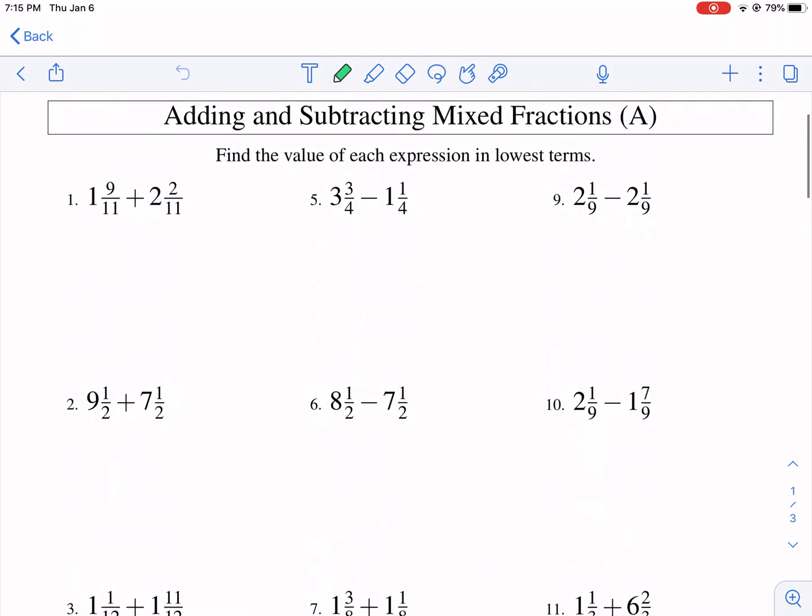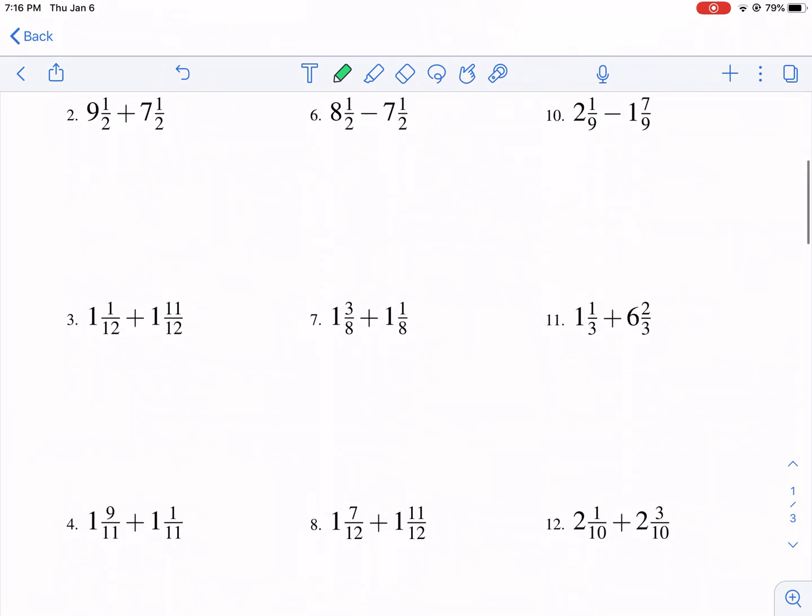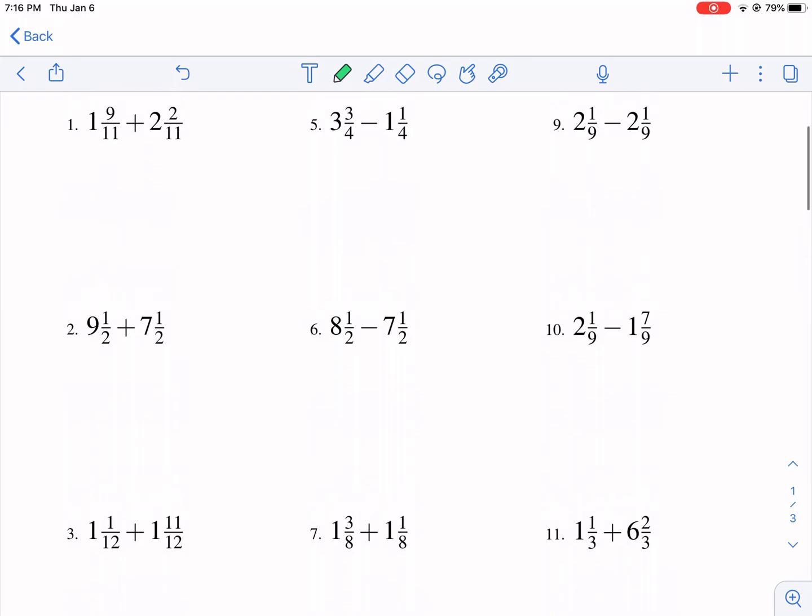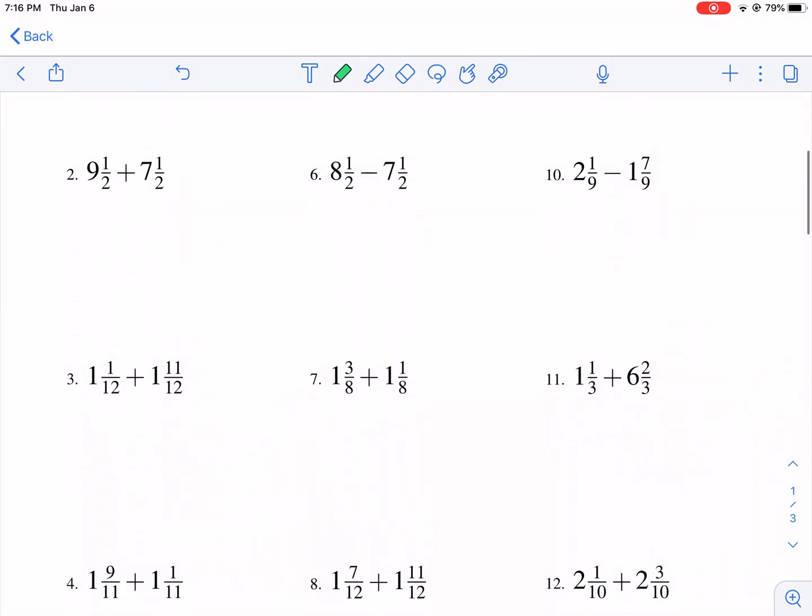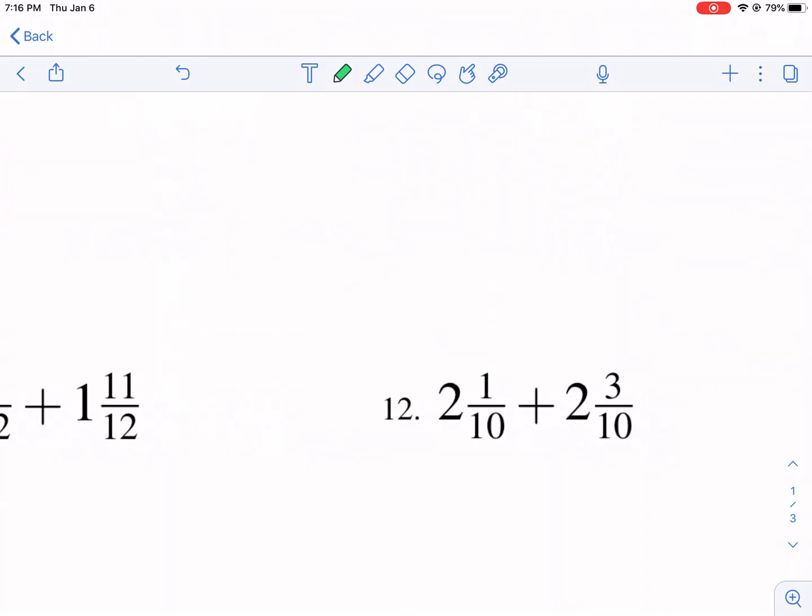Now with this, we have some mixed numbers here, and we're just supposed to add these together and then express in lowest terms when we're done. So we're going to go ahead and do that. I'm not going to start with number one. Instead, I'm going to start with some subtraction, add and subtract. We are going to start with number 12.